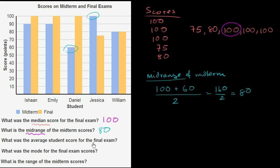What was the average student score for the final exam? We need to add up the scores on the final exams and divide by the number of scores. Let me write this out: 100 plus 100 plus 100 plus 75 plus 80, all divided by 5.